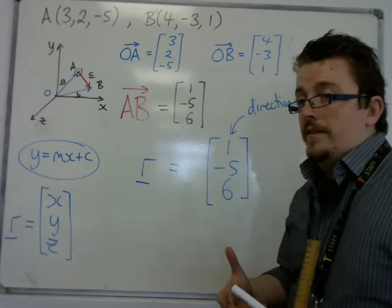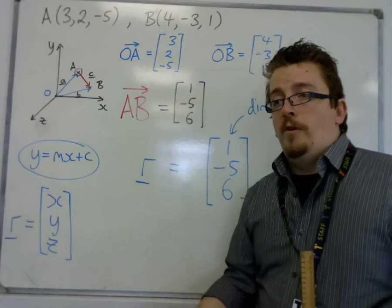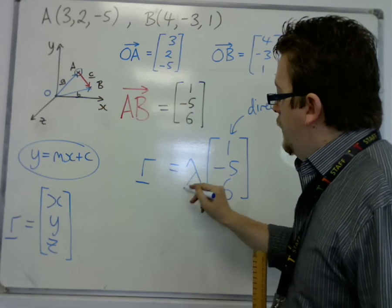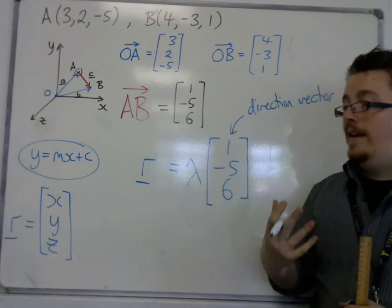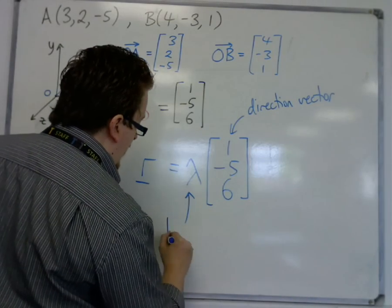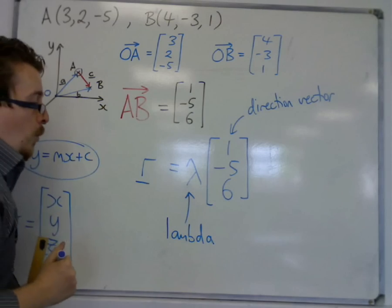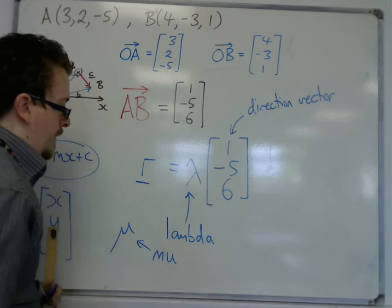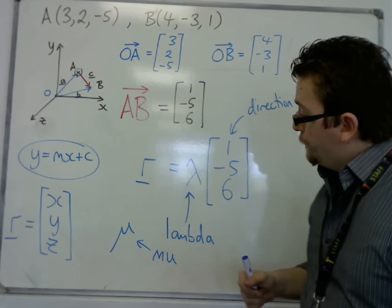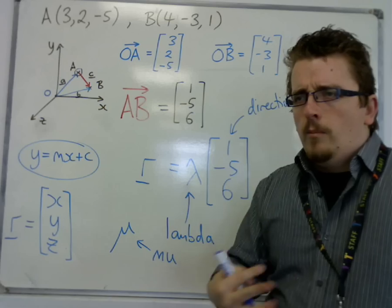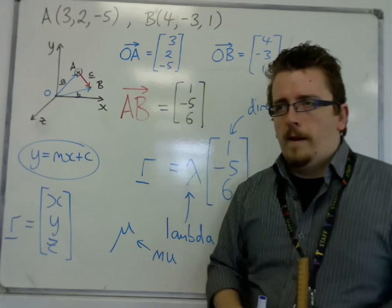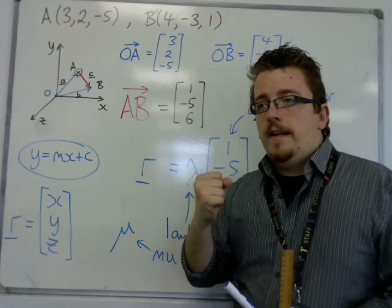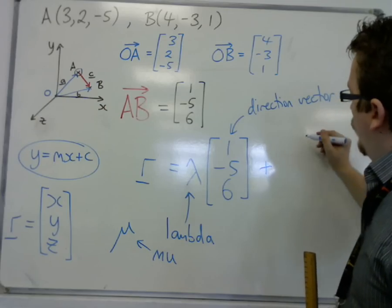So it's also got something to do with the length of it — we must have, firstly, a multiplier, depending on how far along the line we are, to describe where we are on it. This is usually put as lambda — the Greek letter lambda. Or in cases where we have two lines, we might use mu, but lambda for this first case. Lambda is just a number — it's used as a multiplier. So we've got lambda lots of this direction vector, which tells me how far along the line I am.